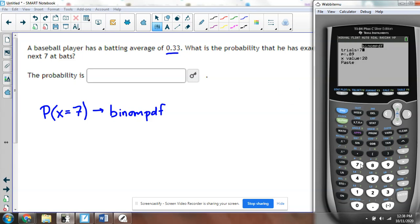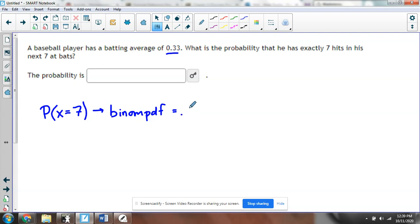Then it asks how many trials? We're talking about 7 at-bats. The p-value is the percentage of each at-bat, 33%. And we want to know the chances of getting 7 out of 7 hits. So we paste. There's our little display, and then it gives us a really low probability. This is going to be 0.00426. Very low probability.